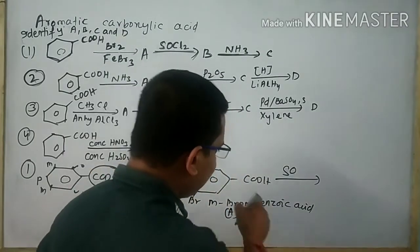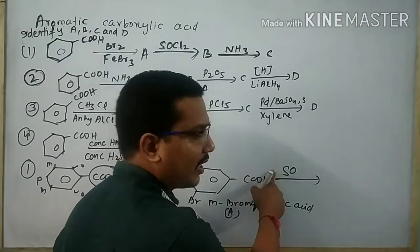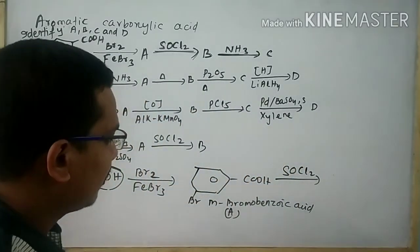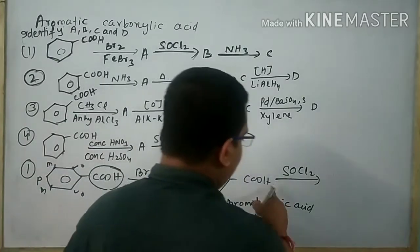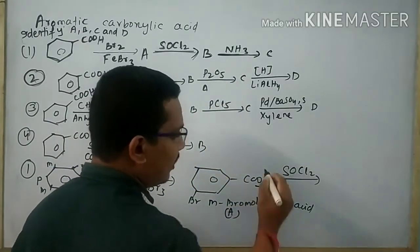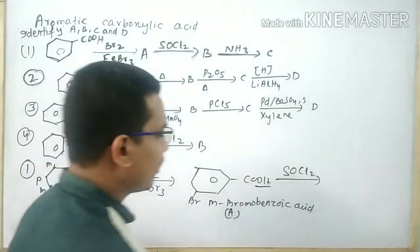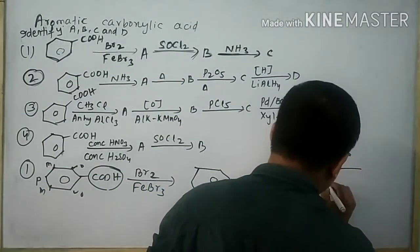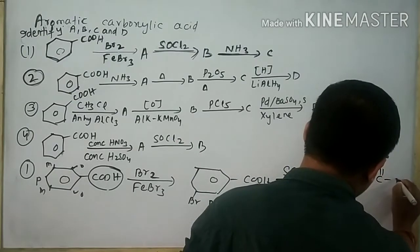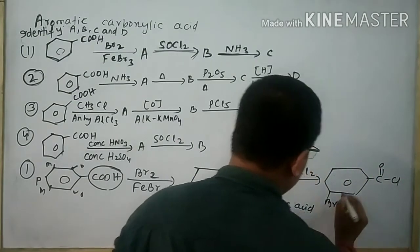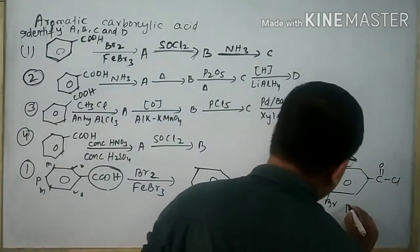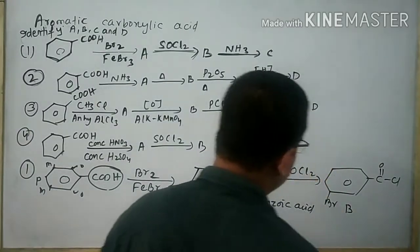Now it is subjected to reaction with SOCl2. Then chlorine atom will attach here and OH will be removed by the SOCl2, and it will form the product. This product is considered as product B.